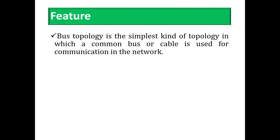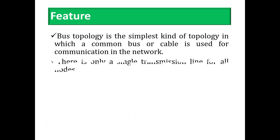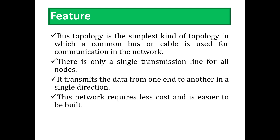Bus topology is the simplest kind of topology in which a common bus or cable is used for communication in the network. This cable is called the backbone. There is only a single transmission line for all nodes. It transmits data from one end to another in a single direction. It is a multipoint connection and a non-robust topology because if the backbone fails, the network crashes. This network requires less cost and is easier to build.